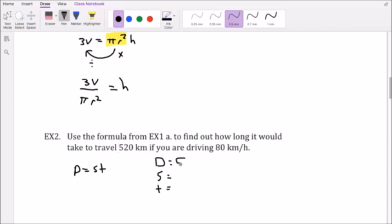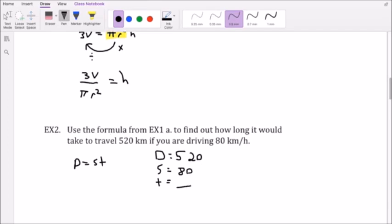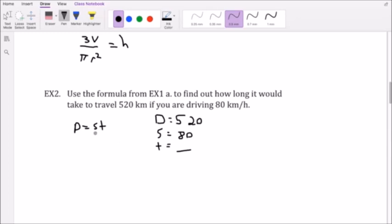So I have 520 kilometers, so I can put that right there. I have 80 kilometers an hour which is my speed. So that really tells me what I need to find. So I'm going to isolate, I'm going to move this over.